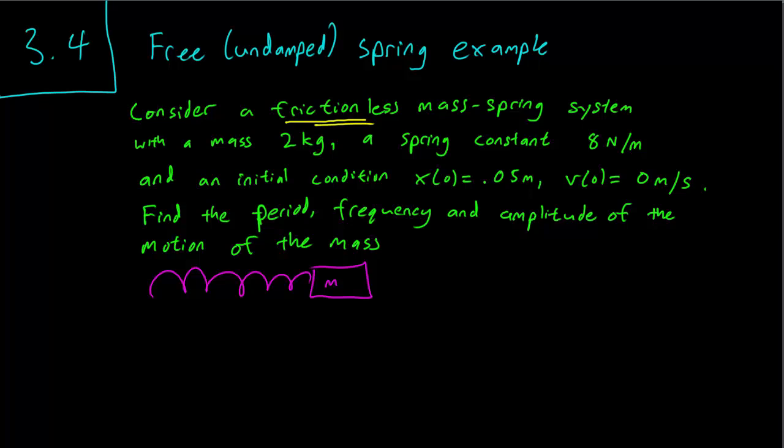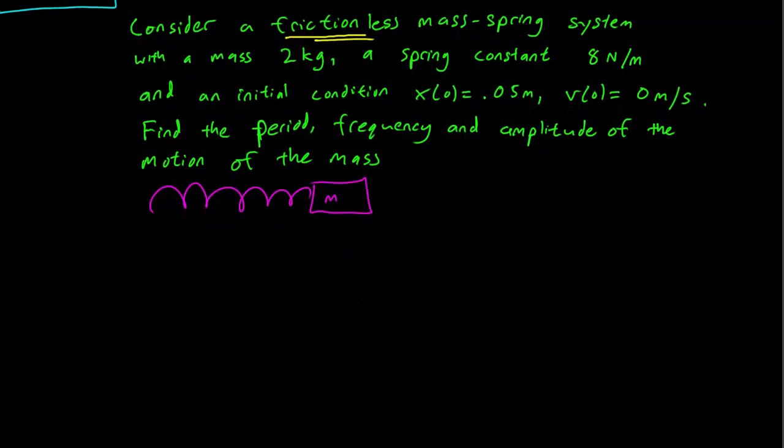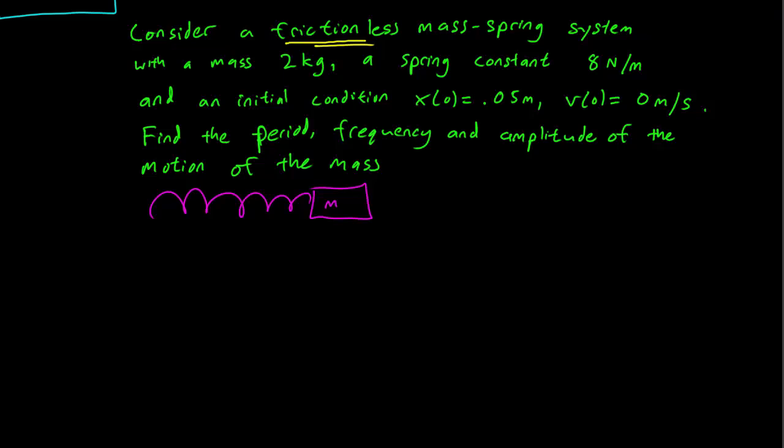Period just refers to how long it takes for the mass to complete one cycle. Frequency is 1 over the period and amplitude is how far the mass travels from the middle point. We will explain it as we go further down the problem, so don't worry if you can't remember your physics.